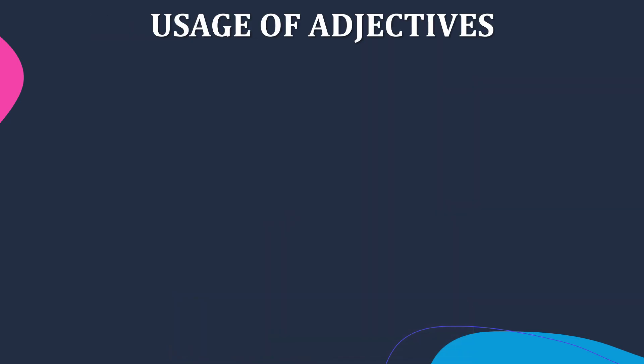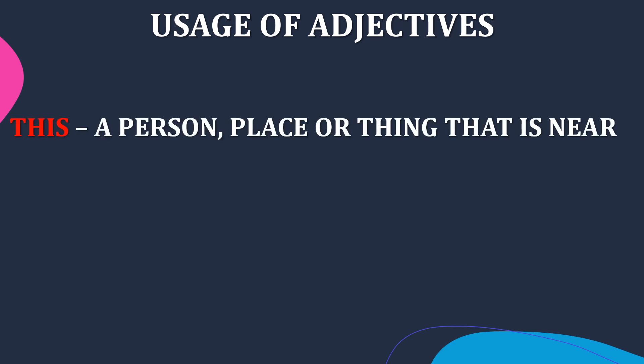Now let's look in detail at ways to use these adjectives. 'This' refers to a person, place or thing that is near — that is very closer to you.